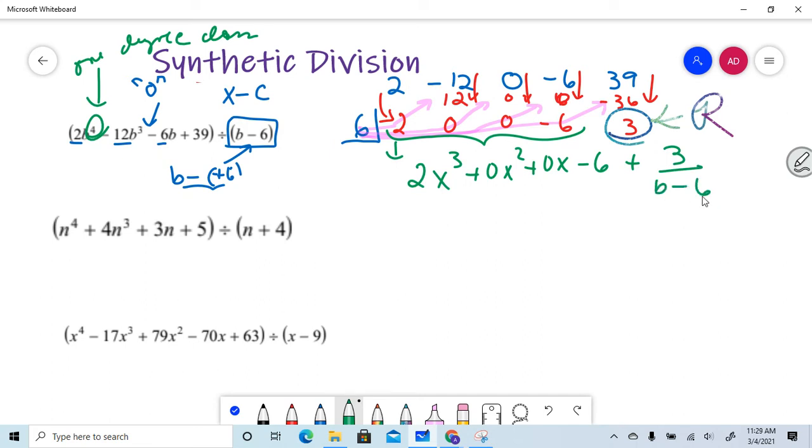Now, I know what you're thinking. You're like, hey, math dealer, what the heck? Do we have to put the zeros? Of course you don't. So your final answer really is 2x cubed minus six plus three over the divisor.